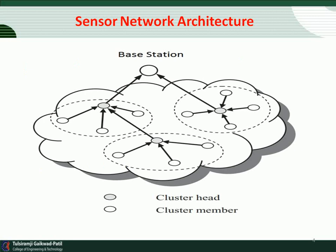First is the flat topology and second is the hierarchical topology. This is the basic structure of wireless sensor network. There are N number of sensor nodes or cluster members that send data to a particular cluster head. The sensor nodes are assigned to a cluster head, and that cluster head sends data to a particular base station.